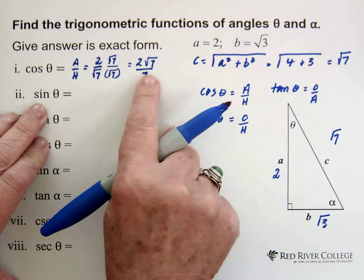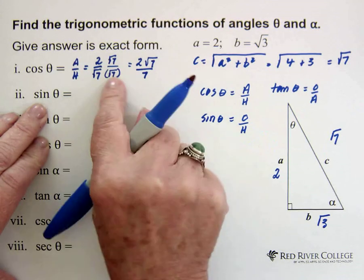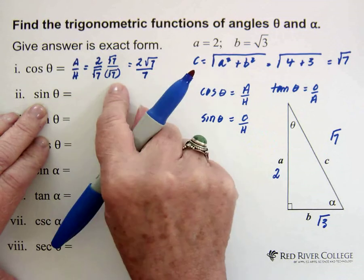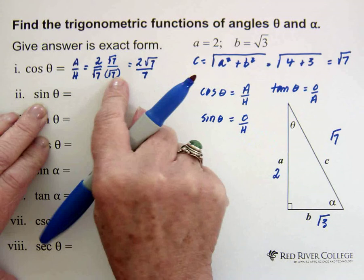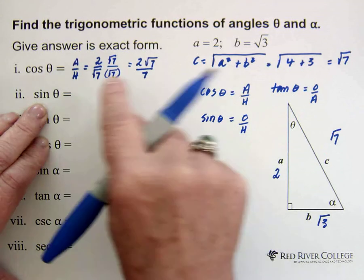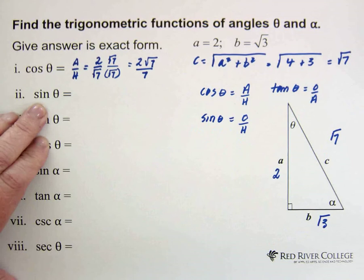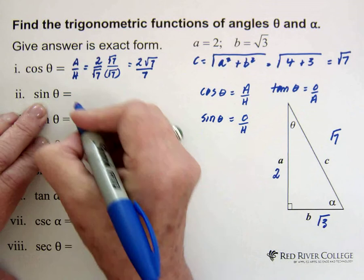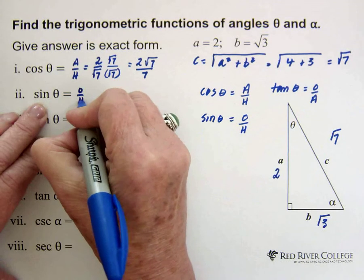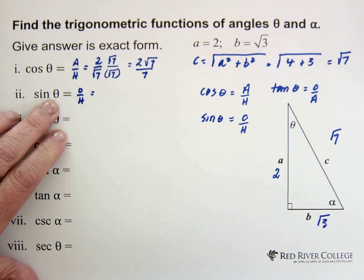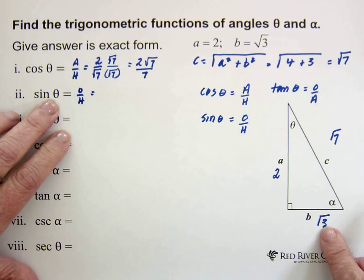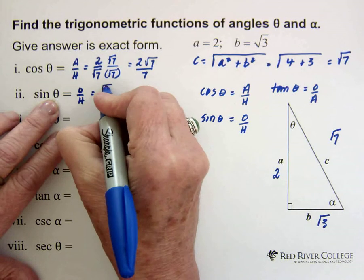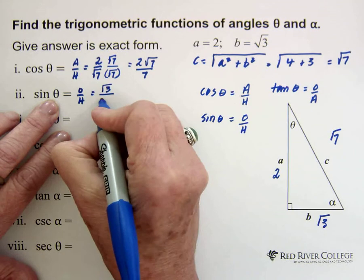I'm actually not going to walk through these steps every time. Just know that if you have a radical in the denominator, you should get rid of it. If anything's too complex, I'll walk through the steps. The sine of the angle is opposite over hypotenuse, and the side opposite theta is the square root of 3. So we have the square root of 3 over the hypotenuse, which is the square root of 7.